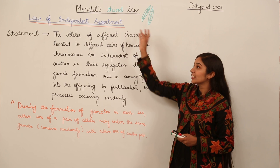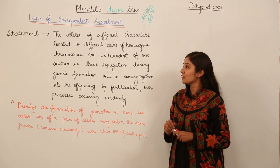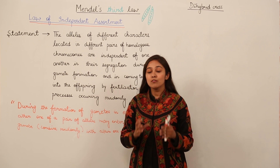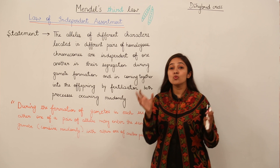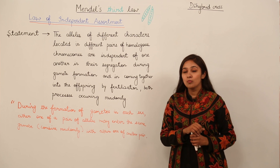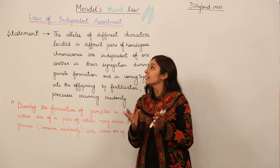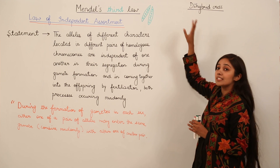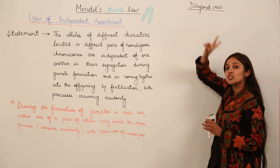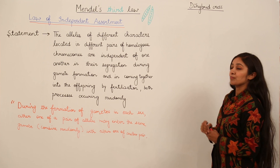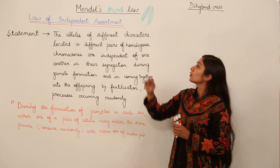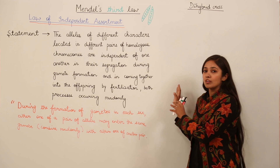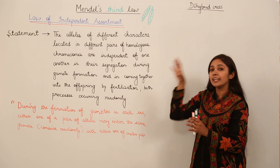Let us discuss Mendel's third law, the law of independent assortment. When Mendel performed his first monohybrid cross, he was eager to know what would happen if he considered two characteristics at a time. A cross that considers two characteristics simultaneously is known as a dihybrid cross, because 'di' means two. Based on this dihybrid cross, Mendel gave his law of independent assortment.